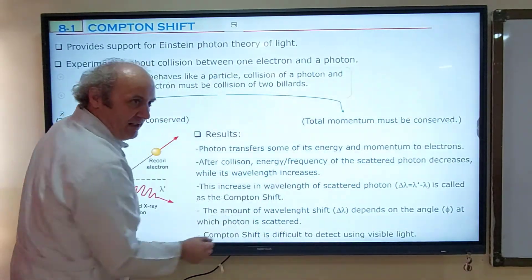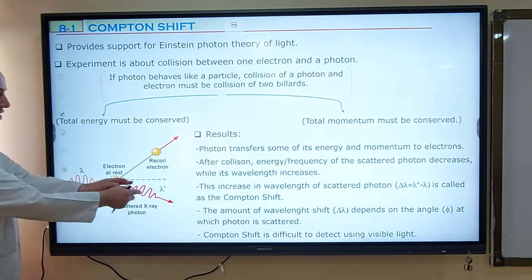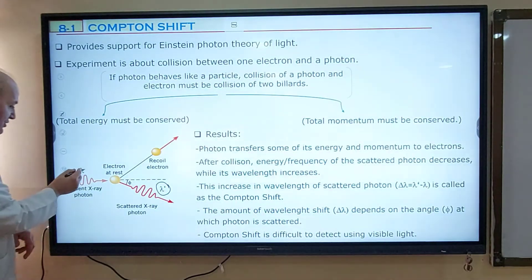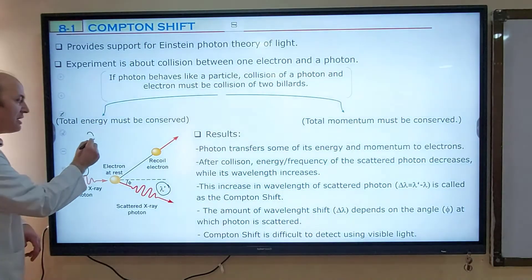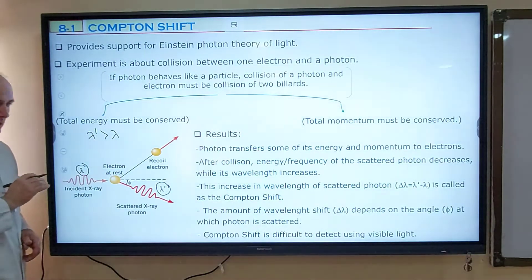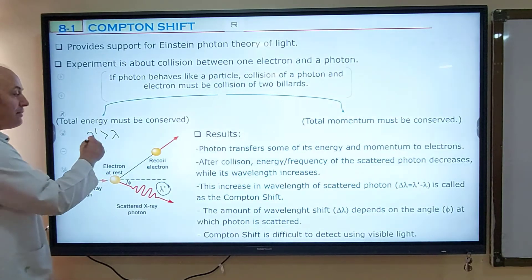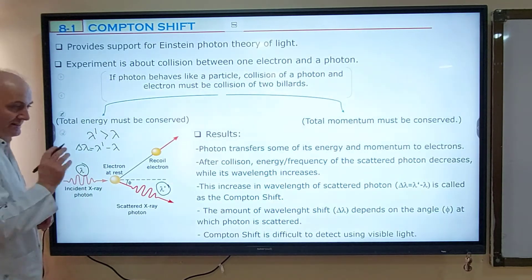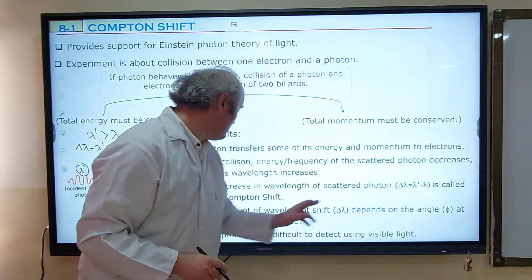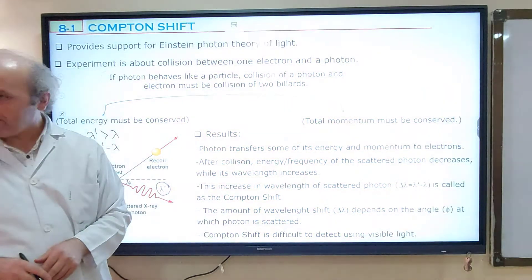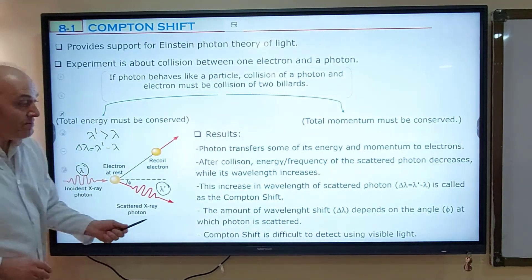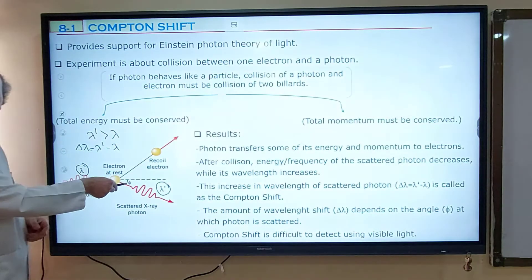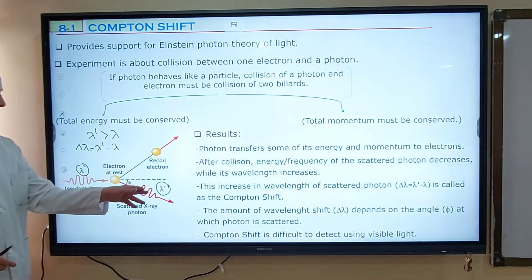This increase in wavelength after collision, wavelength after collision is represented by lambda prime. Before the collision, lambda. So lambda prime is longer than lambda. This increase in wavelength of the scattered photon is called Compton shift. The amount of the wavelength shift, how much is this difference, delta lambda, depends on this angle. At what angle this photon will be scattered.